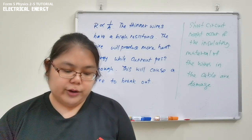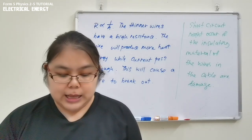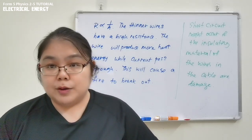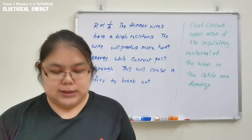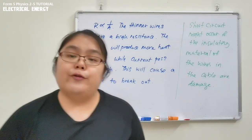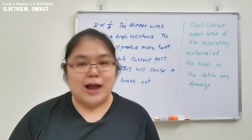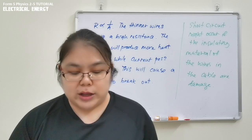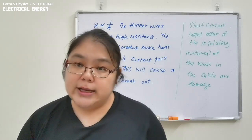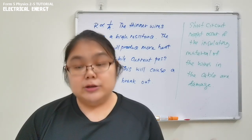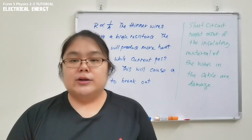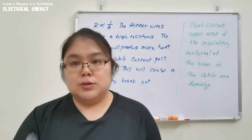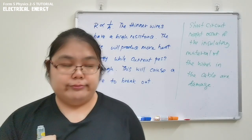Question 17 shows a table of electrical appliances used for one month: air conditioner, water heater, and refrigerator, with their ratings and hours of use given. The first sub-question asks what is meant by '240 V, 4 kW' — you should write that answer yourself. The 4 kW rating refers to the water heater.